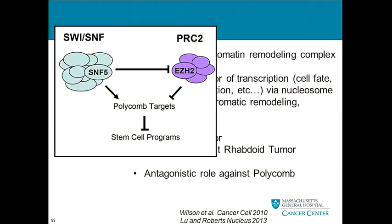SWI/SNF is directly antagonized by polycomb repressive complex 2 — they are thought to never be in the same place at the same time. SWI/SNF can directly inhibit EZH2 activity and expression through SNF5. So we have polycomb laying down methylation marks to suppress transcription, and SNF5 as a negative regulator of that, finely tuning transcription levels to regulate stem cell programs.